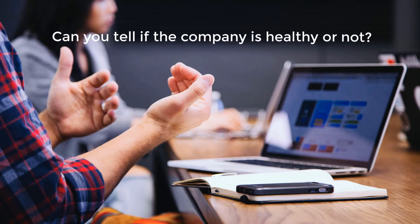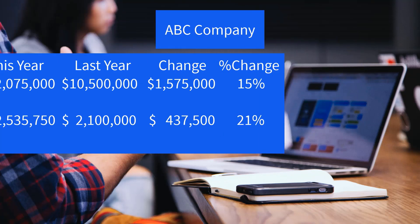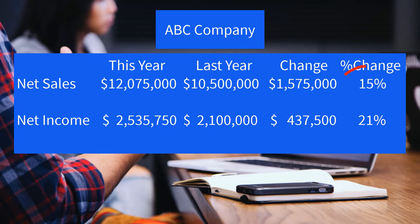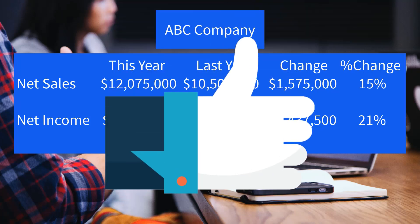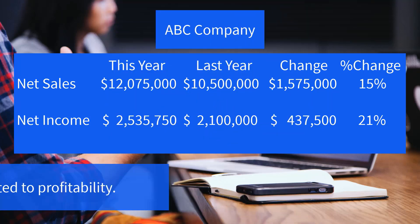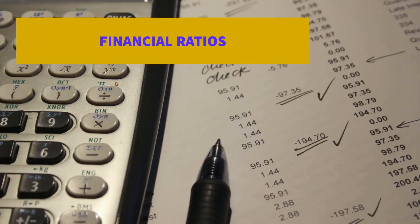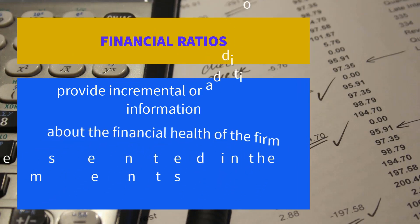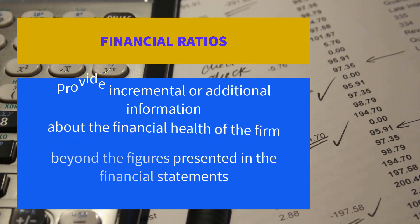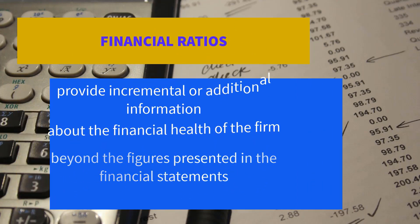Can you tell if a company is healthy or not? For example, ABC Company's net sales rose 15% and its net income increased 21% to $2.5 million from $2.1 million during the same period the previous year. The figures indicate that ABC Company did well this year, but financial health is not limited to profitability. Financial ratios provide incremental information about the financial health of the firm beyond the figures presented in the financial statements.